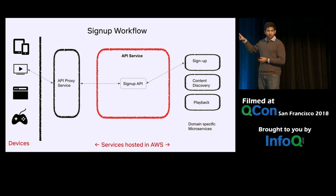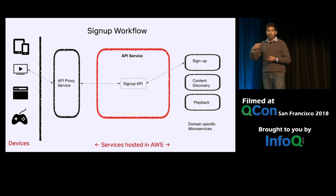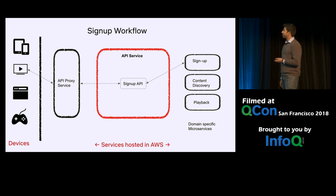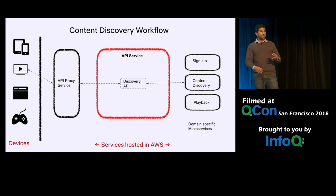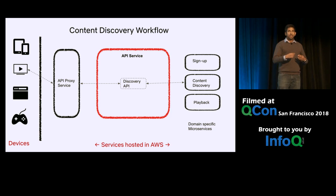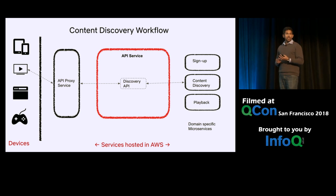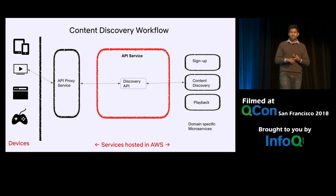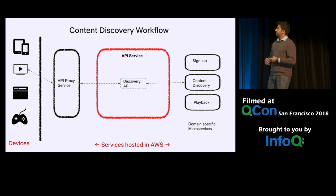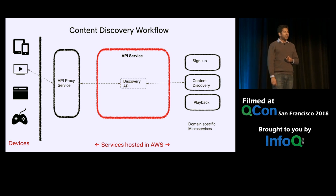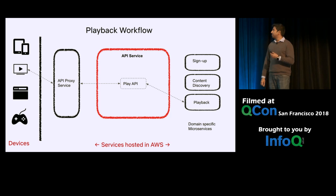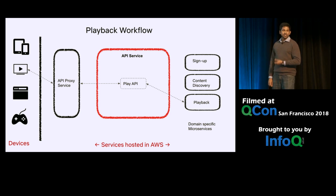Within the API service, we have three major workflows. The first is the signup workflow, enabled by a set of signup APIs in coordination with membership, authorization, billing, and other microservices. Once you log in, you see rows and rows of personalized content — this is enabled by discovery APIs in coordination with personalization, artwork, title metadata, localization, and dozens of other services. And finally, you hit the play button. From the moment you hit play till you exit playback, it is enabled by a set of APIs we call the playback API and its associated microservices.